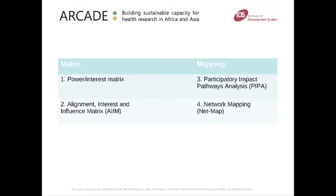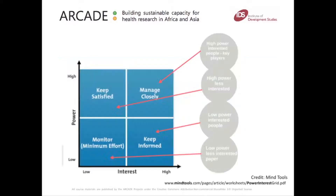The power interest matrix is one example of a stakeholder mapping tool, and we're going to be using this in a practical exercise a little bit later on. As you can see, it's a grid split into four with a power and an interest axis. With any stakeholder mapping tool, it's useful to add your influencing engagement goal to the map you have created just to keep your discussions focused. Once you've brainstormed your long list of key audiences, you need to locate them on the grid.